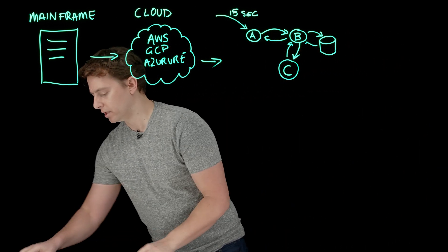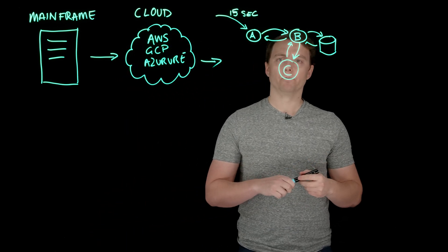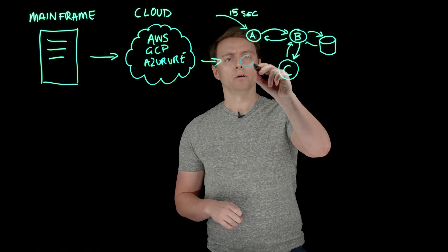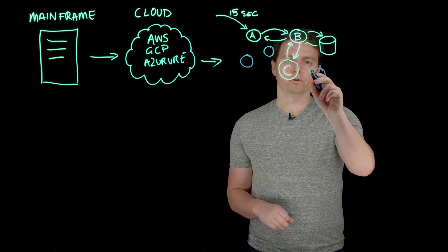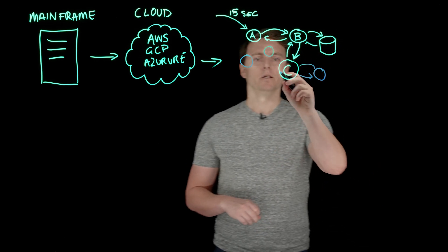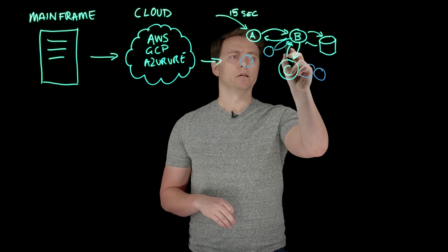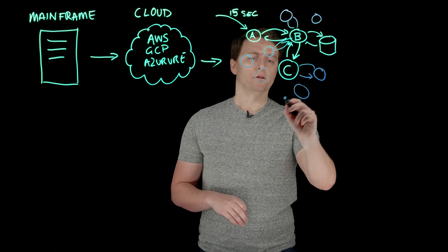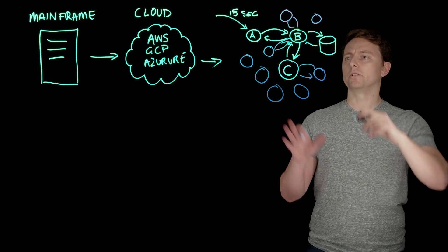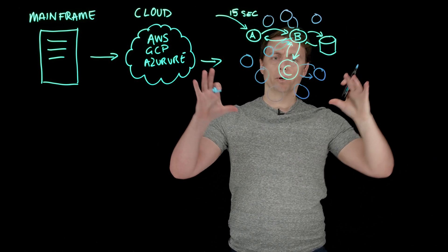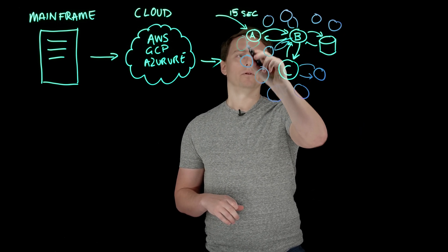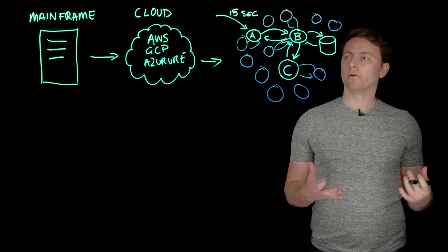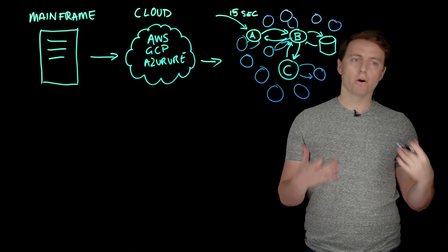This can start to get very complicated because perhaps your system starts with three services, but over time more services get added and dependencies come in. Things can get messy quite quickly. If you look at the state of many companies' architecture at the moment, you'll see that many organizations have this architecture, and what can originally seem like a very logical way to do things can get very messy very quickly.